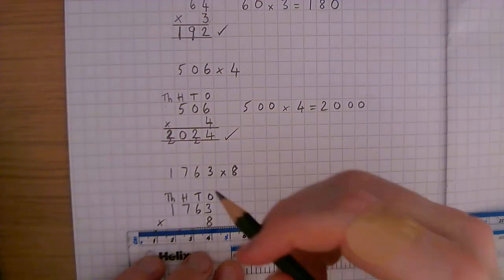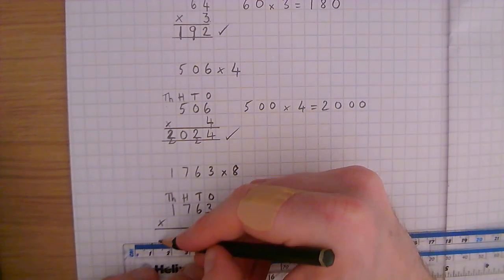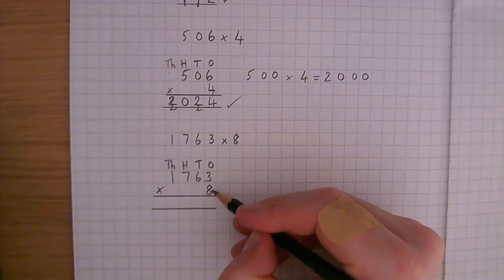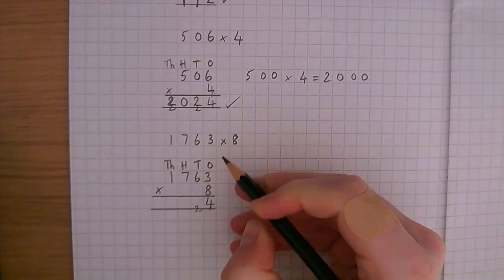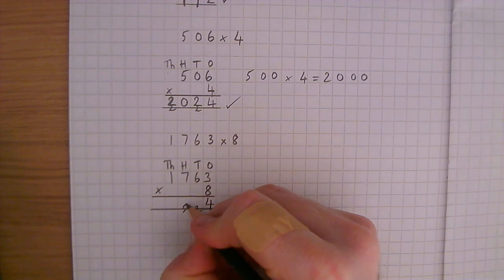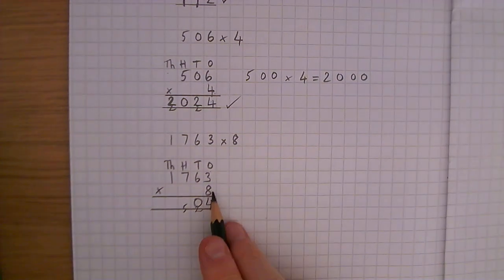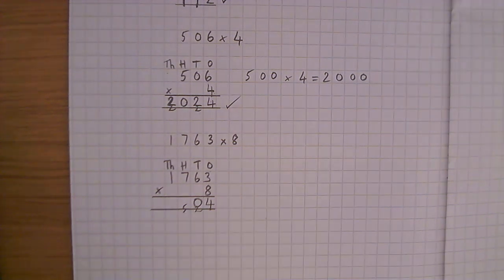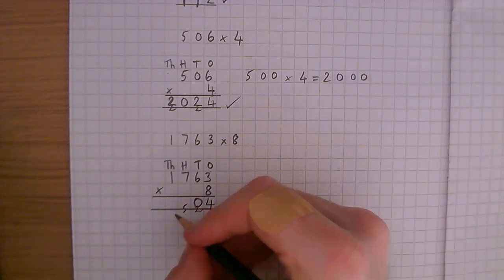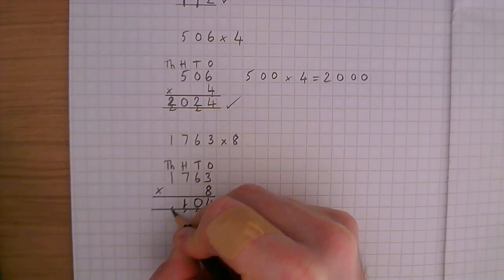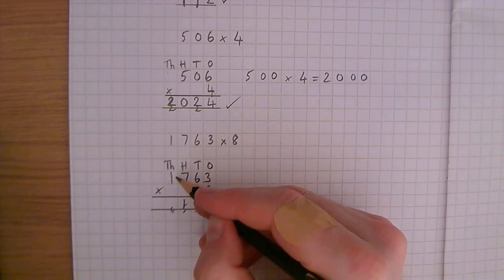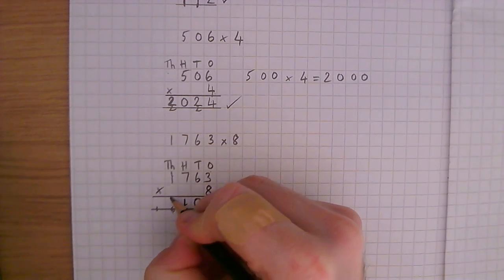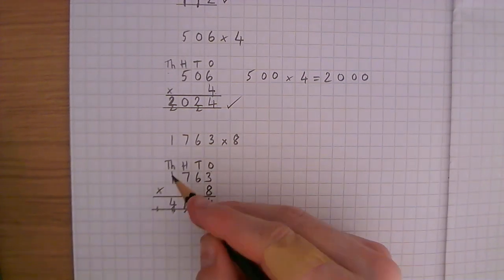We're going to start with the ones and we're going to do the ones times the ones, then the ones times the tens, and the ones times the hundreds. So 8 times 3 is 24. 8 times 6 is 48. Add the 2 is 50. 8 times 7 is 56. Remember to add the 5. 57, 58, 59, 60, 61. 8 times 1. Remember it's really 8 times 1,000. 8 times 1 is 8, add 6 is 14. There's nothing left to multiply 8 by. So our 1 goes there.